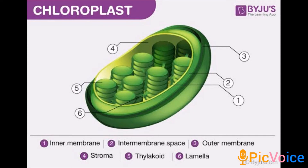Chloroplasts have a two-membrane structure like mitochondria, with an inner membrane, outer membrane, and an inter-membrane space. The parts include stroma, thylakoid, and lamella. Chloroplasts contain chlorophyll and carotenoid pigments responsible for trapping light energy essential for photosynthesis, allowing plants to prepare their own food.